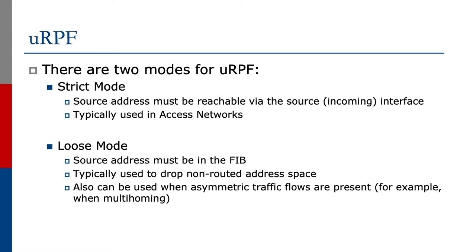The other mode is known as loose mode. This is where the source address must be in the router's FIB. Typically this is used to drop non-routed address space, and it can also be used when asymmetric traffic flows are present, for example in multi-homing scenarios.